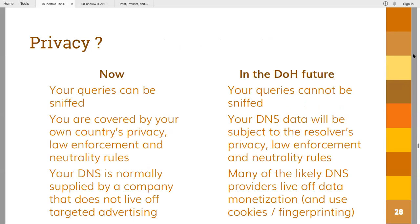Then there's the privacy discussion, since privacy is the motivation for encrypting the communication. There are cases where DOH gives you more privacy, which is good — it's good that queries cannot be sniffed anymore. But the problem is that you're changing jurisdiction. From a European point of view, most people feel that GDPR is the best privacy law currently available anywhere in the world. Sending data to entities not based in Europe is a problem. There is a commitment — Cloudflare and Mozilla have committed to a pretty good privacy policy, actually better than many ISP servers — but the web world's business model is much more based on monetizing data, which is the long-term concern.